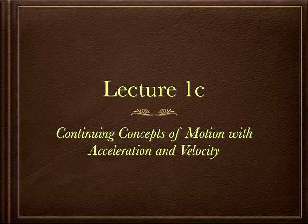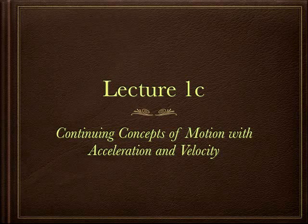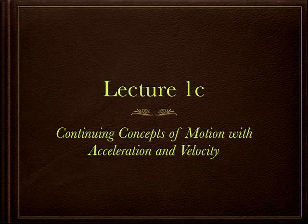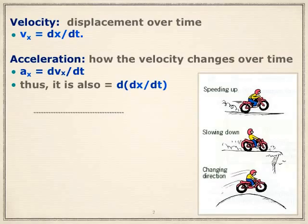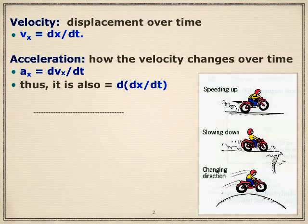Lecture 1C, continuing the concepts of motion, focusing on acceleration and velocity. Velocity is displacement over time. Recall that displacement is change of position with direction. So change of position over time is speed, and speed with direction is velocity. Or, velocity is the derivative of position over time.